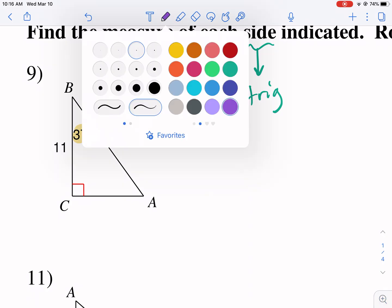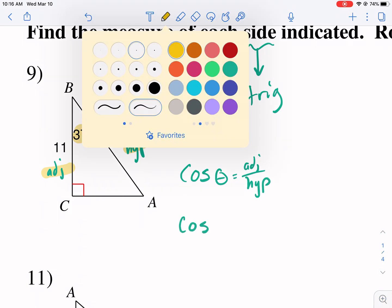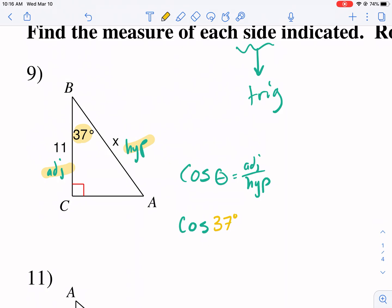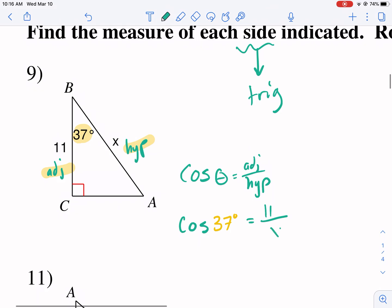The process is almost identical. We take our reference angle. Now we're going to label the sides: opposite, adjacent, and hypotenuse. I'm going to erase opposite because there's no information on it. We only care about the 11 and the X, the adjacent and the hypotenuse. Adjacent and hypotenuse are used in only one function, that's cosine. So the cosine of 37 degrees equals 11 over X.